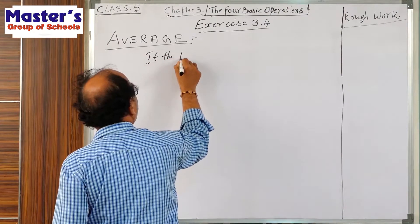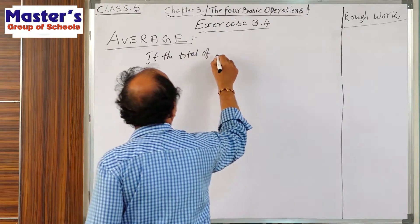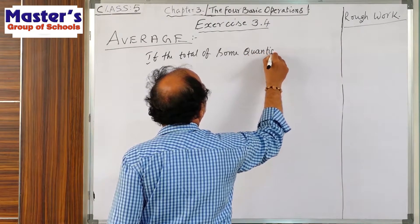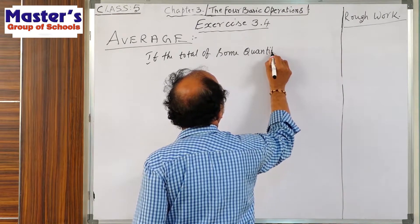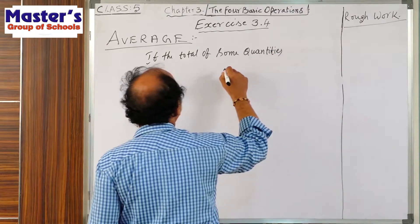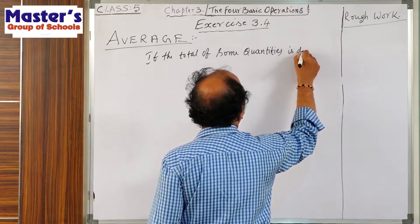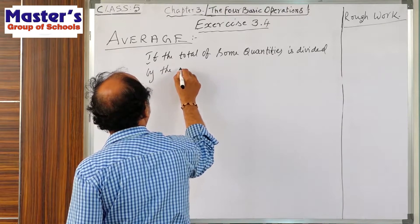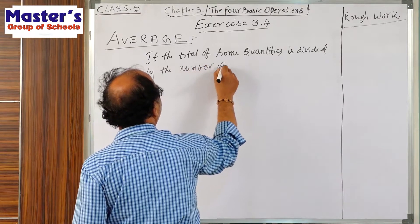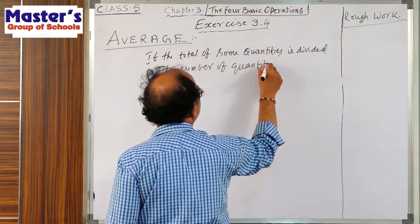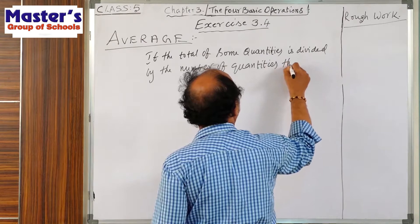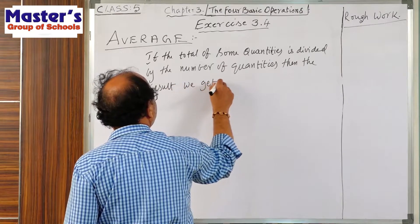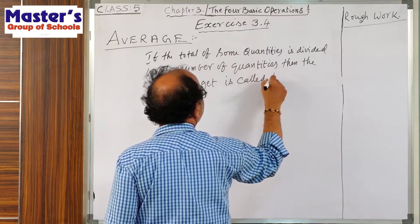If the total of some quantities is divided by the number of quantities, then the result we get is called the average.